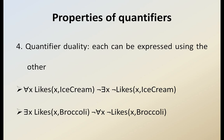Coming to quantified duality — each quantifier can be expressed using the other. For all X, likes(X, ice cream) equals NOT there exists X, NOT likes(X, ice cream). And there exists X, likes(X, broccoli) equals NOT for all X, NOT likes(X, broccoli). Like this, each quantifier can be represented in terms of the other.